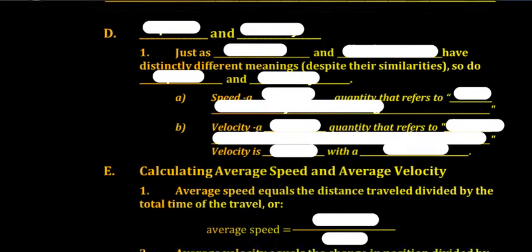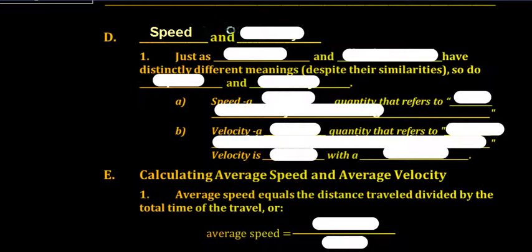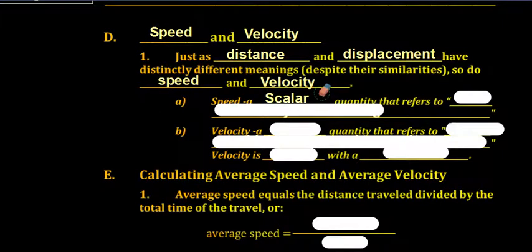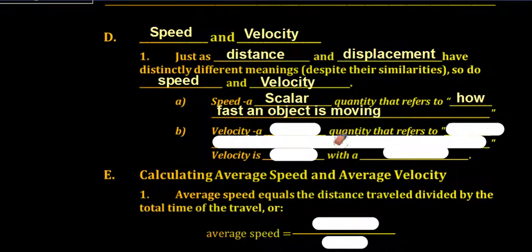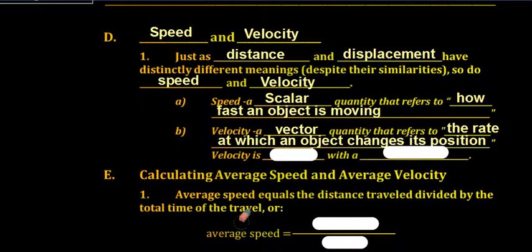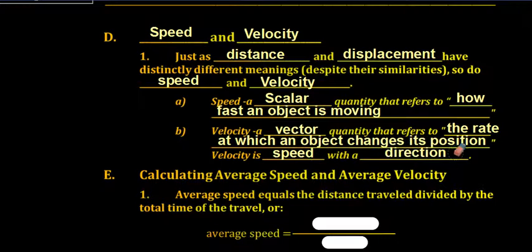This brings us to how fast this all happens — speed and velocity. Just as distance and displacement have distinctly different meanings despite their similarities, so do speed and velocity. Speed is a scalar quantity that refers to how fast an object is moving — the slowest speed an object can have is zero. Velocity, however, is a vector quantity that refers to the rate at which an object changes its position. Because velocity is a vector, it is speed with a direction.